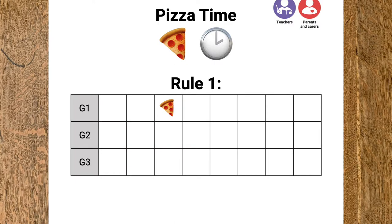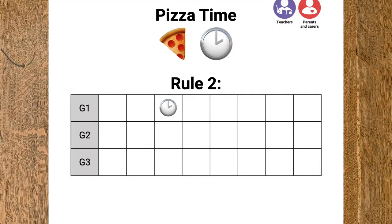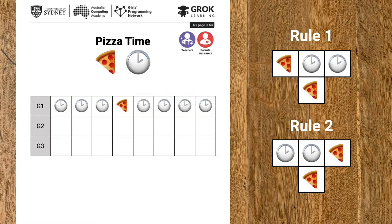Here's how they work. Rule number one: along a generation, if you have pizza, clock, clock, then the square on the next row — the next generation — in the middle of those is a pizza. Rule number two is similar: as you go along, if it's clock, clock, pizza, then the square underneath that in the middle is also a pizza. If neither of these two rules apply, then the square in the next generation row is a clock.